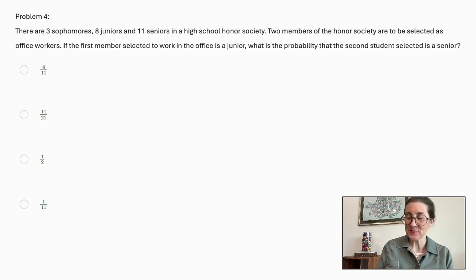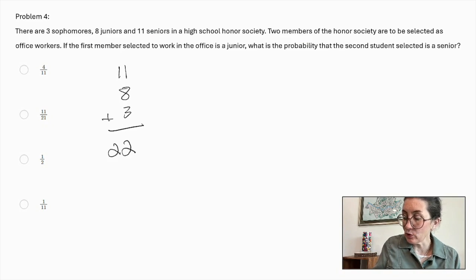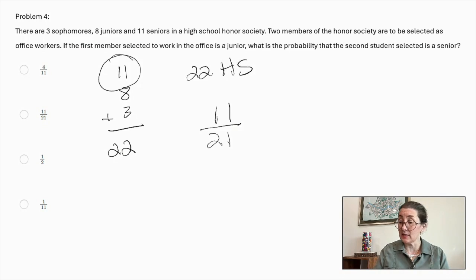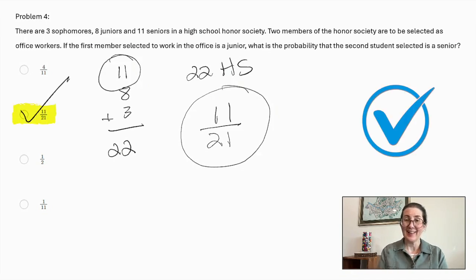Let's start the math. There are 11 seniors, 8 juniors, and 3 sophomores. Adding those up, there are 22 in the honor society in total. But one has already been selected, and that is a junior. So now the probability is not out of 22. It is out of 21. And there are only 11 seniors. None of them have been chosen yet. So the probability that the second student selected is a senior is 11 out of 21. There's your correct answer.